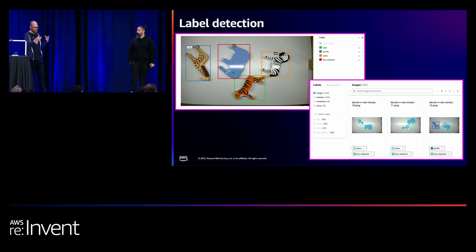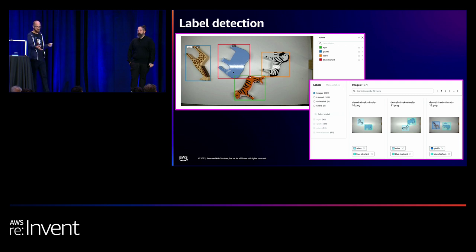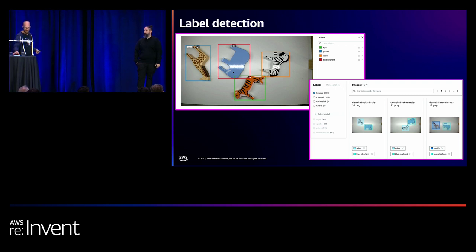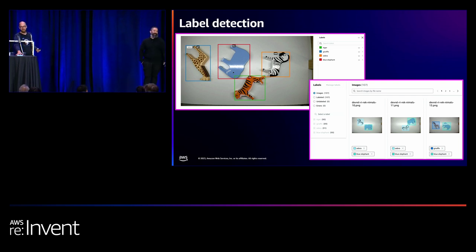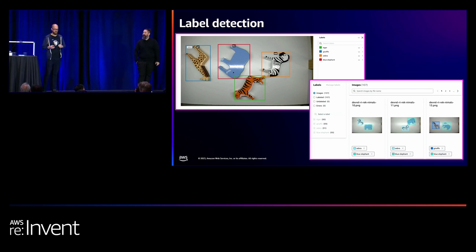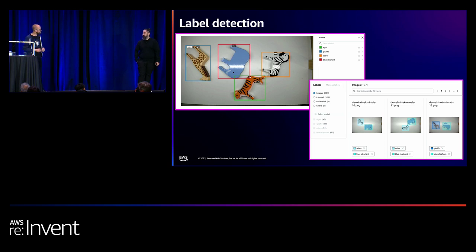Rekognition custom labels has a user interface to generate your data set. I took a video on the show floor where we moved all the different characters around, then took screenshots from those and was able to create bounding boxes around them and create the data set.